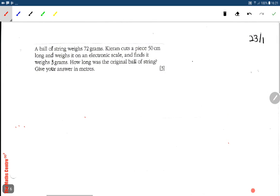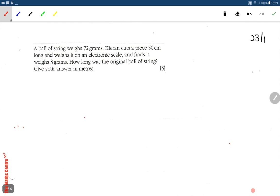There's a ball of string which weighs 72 grams. Kiran cuts a piece 50 cm long and weighs it, and finds that it weighs 7 grams. How long was the original ball of string?